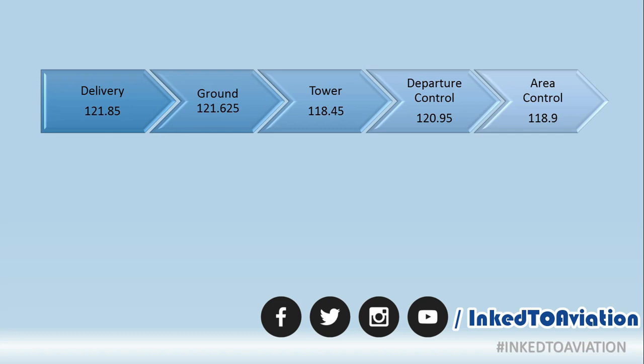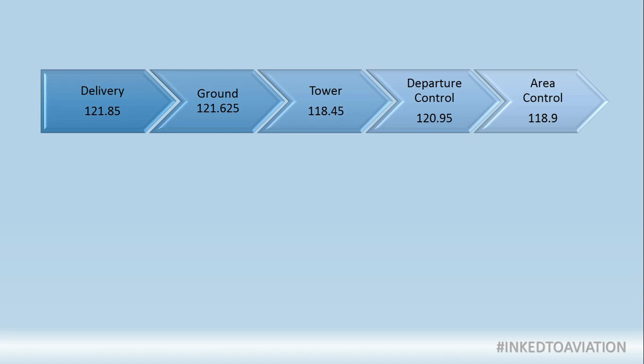Let's say the first officer is handling communications. The first officer contacts ground requesting push and start. Shamshabad Ground clears him for push and start and gives taxi instructions all the way to the holding point of runway 27 or 09. Once reaching the holding point, Shamshabad Ground passes him on to Shamshabad Tower on 118.45. The first officer calls Shamshabad Tower, takes clearance for takeoff, and once takeoff clearance is obtained and the aircraft takes off, departure control comes into picture.